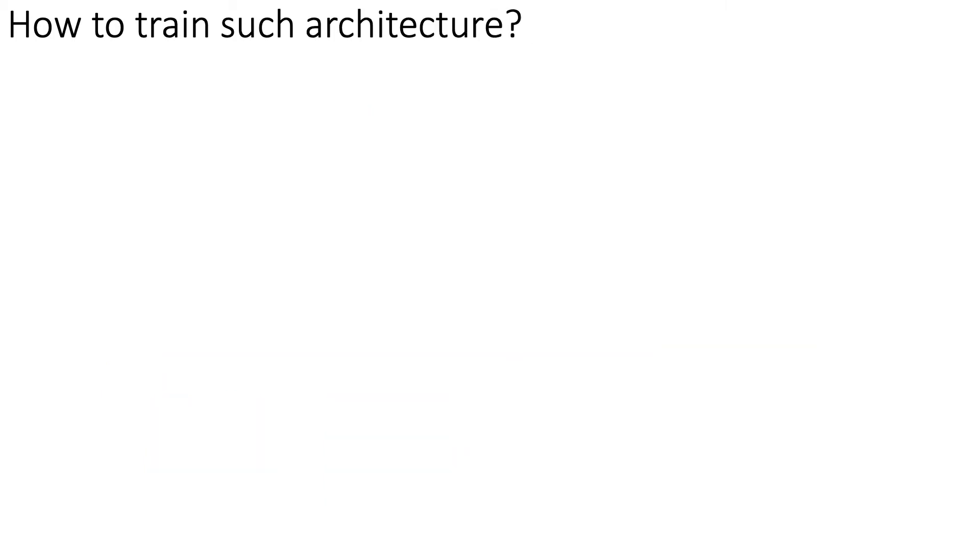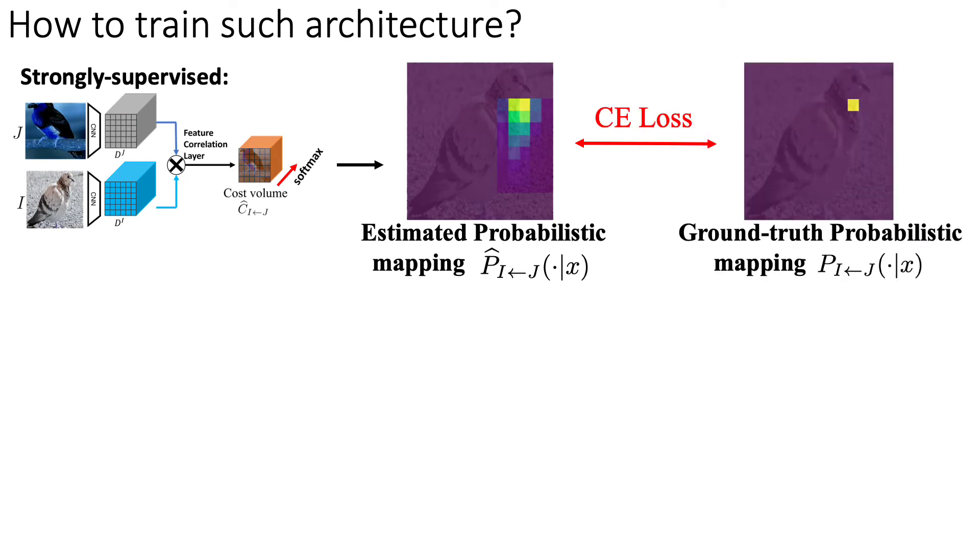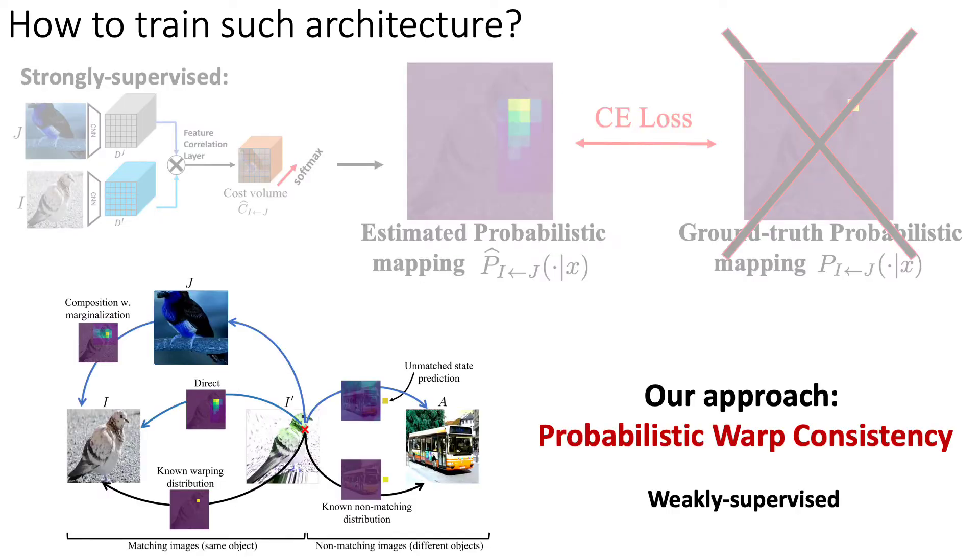So how do we train such architecture? In the supervised case it is typically trained with a cross entropy loss which enforces the estimated probabilistic mapping to be equal to the ground truth one. But the issue is in the semantic matching task it is very hard if not impossible to get ground truth correspondences. So in this work we introduce probabilistic warp consistency, a weakly supervised learning objective for probabilistic mappings. Now let's dive into the method.